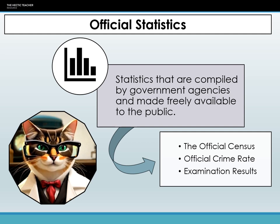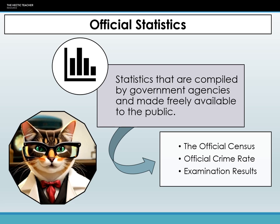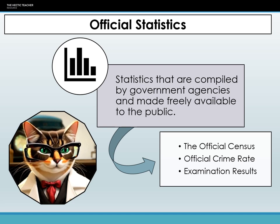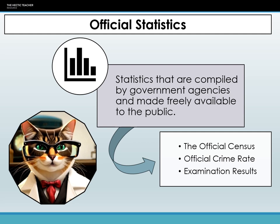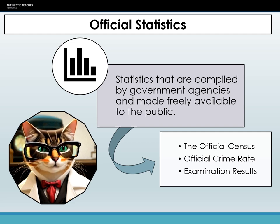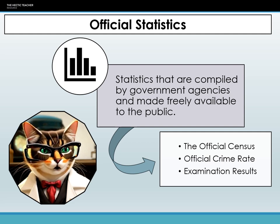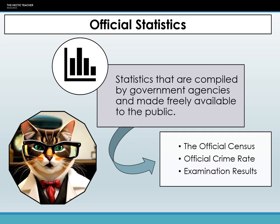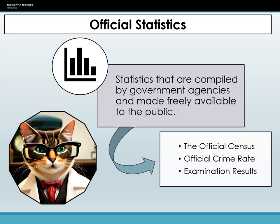Examples of official statistics include the population census, which is completed every 10 years, the crime rate which is published quarterly, intermittent declarations of unemployment figures, and the quantifications of a nation's gross domestic product, GDP. For those engaged in sociological inquiry, these statistics are invaluable. They offer exhaustive data, guaranteeing an extensive and representative dataset.